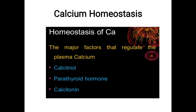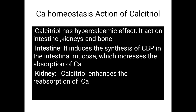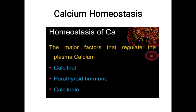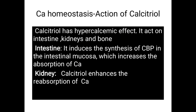Calcitriol and parathormone increase serum calcium level — they deposit calcium to the bone and increase reabsorption of calcium. Calcitonin, on the other hand, decreases the serum calcium level, so calcitonin is hypocalcemic — it helps to decrease calcium level. These are the three hormones under calcium homeostasis, and students should remember this as a five-mark question.